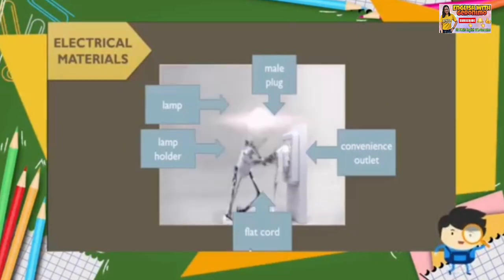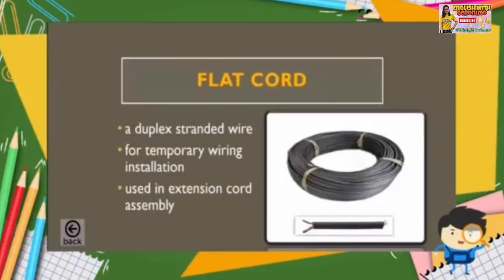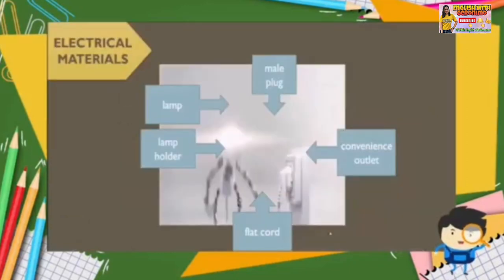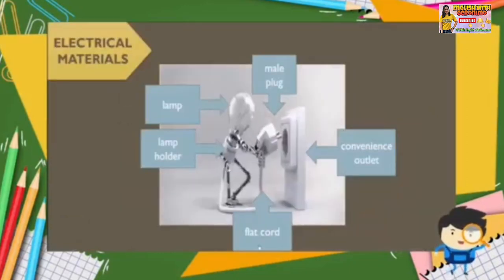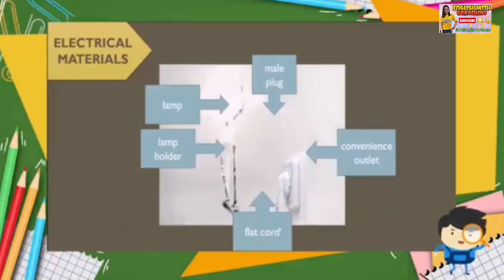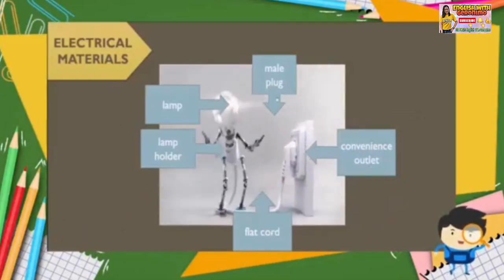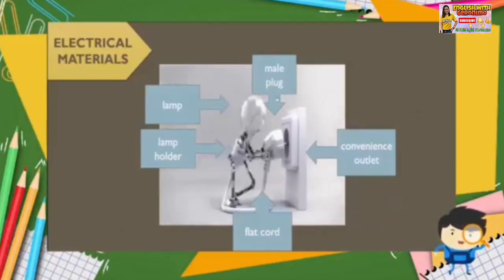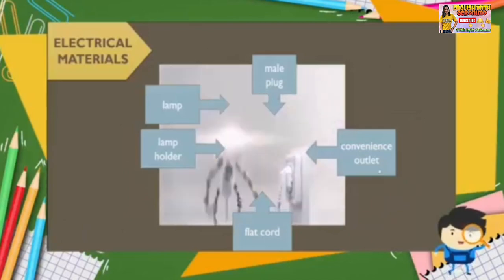Next is flat cord. Flat cord is a duplex stranded wire for temporary wiring installation. If you want to assemble an extension cord, you will be needing a flat cord. Other than flat cord, you can also use convenience outlet and nail plug in an extension cord assembly.